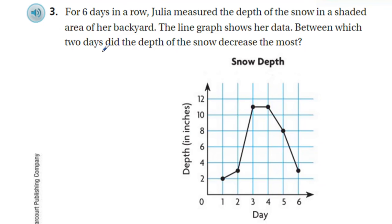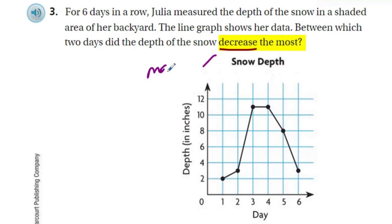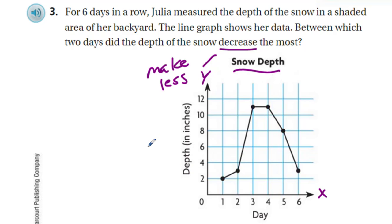Problem three: for six days in a row, Julia measured the depth of snow in a shaded area of her backyard. The line graph shows her data. Between which two days did the depth of the snow decrease the most? Key word: 'decrease the most.' Decrease means to make less. Our y-axis represents the depth in inches; our x-axis represents the number of days. The graph's title is 'Snow Depth.'